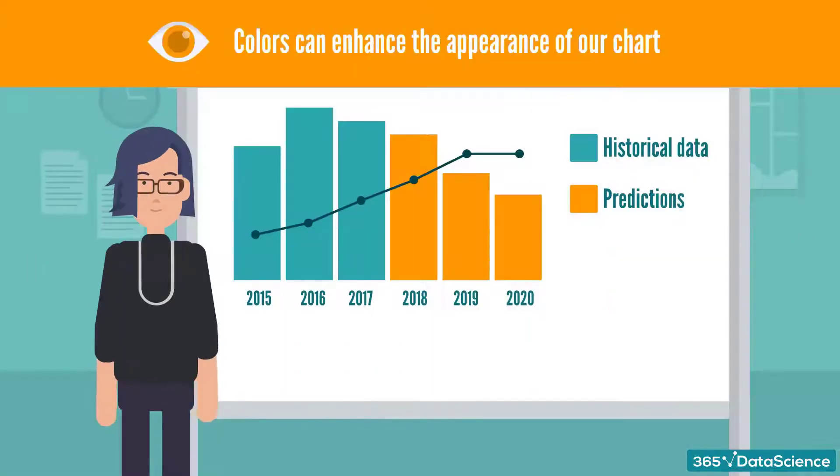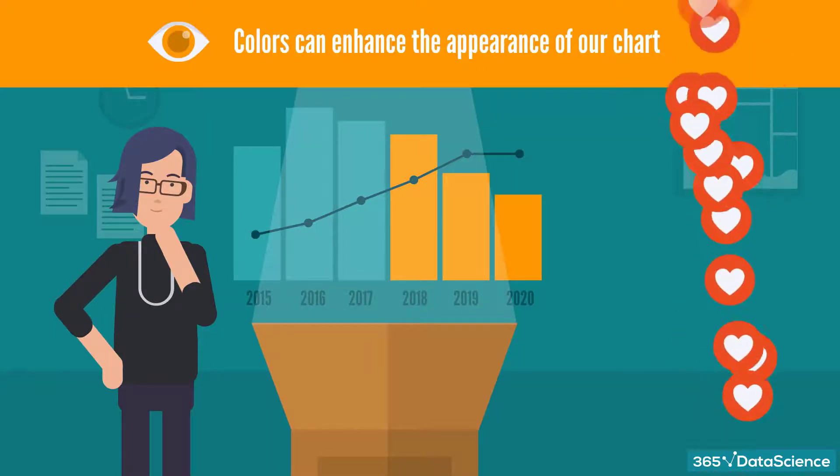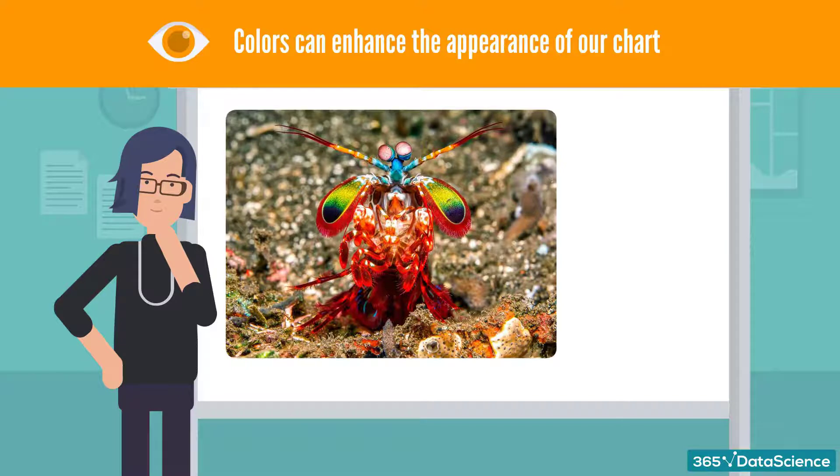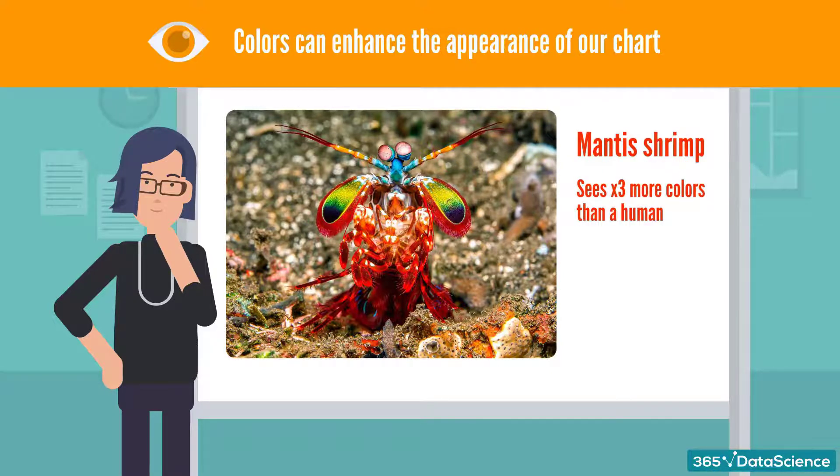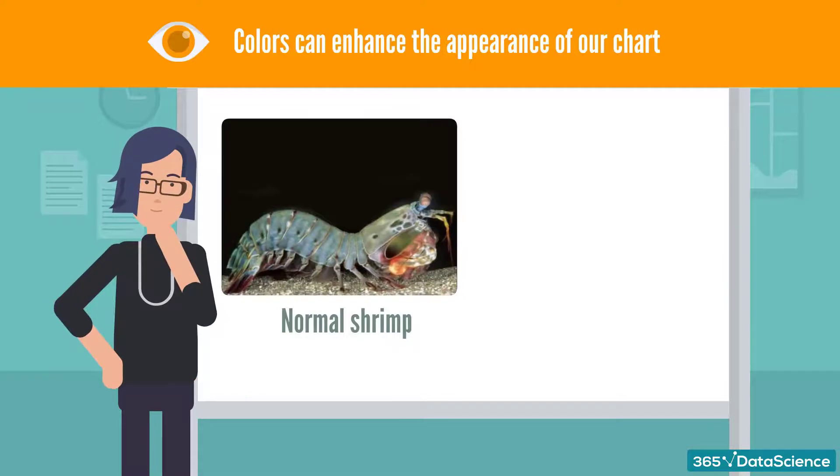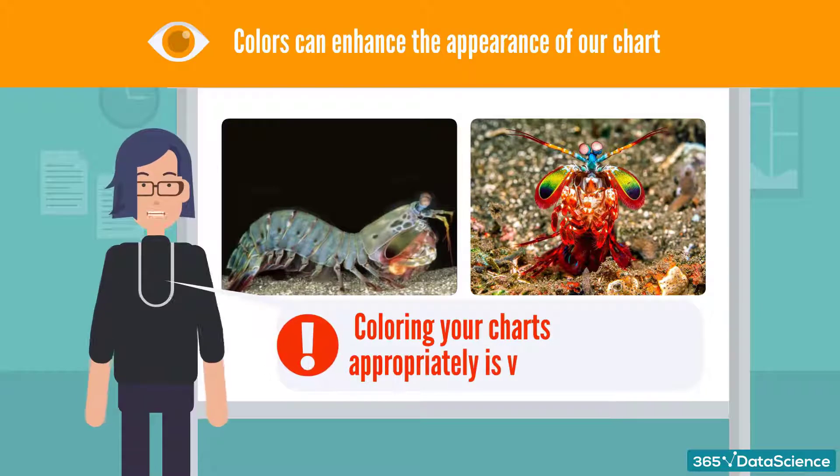Apart from informational, colors have another important purpose. They can be used to draw our attention. Most of the time we use them with this purpose exactly, to make our chart stand out more in a nice way, one that the audience will enjoy and find visually pleasing. Please look at this fellow. The colors on this creature are truly magnificent. This is a mantis shrimp, the creature that practically sees three times more colors than a human. It's here to tell us that colors can aid your presentation tremendously. They can turn it from a dull shrimp into a glorious creation. So coloring your charts appropriately is very important.